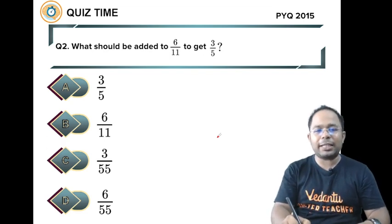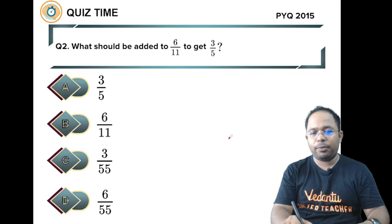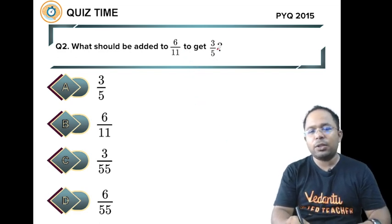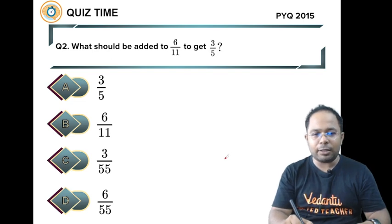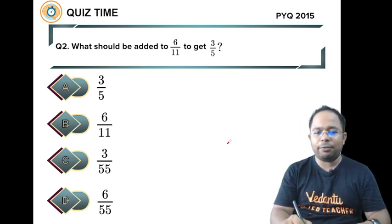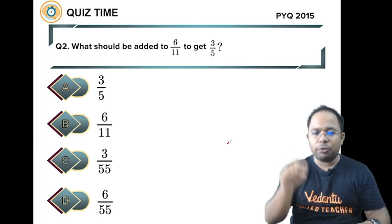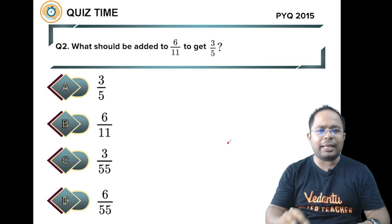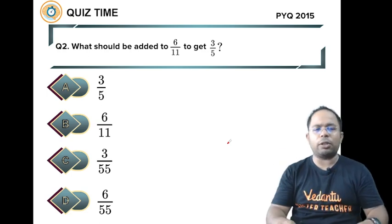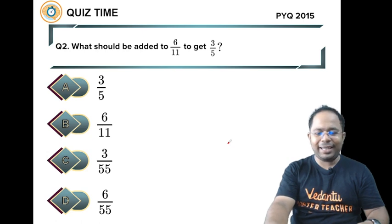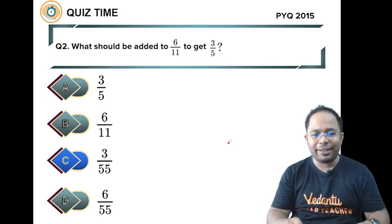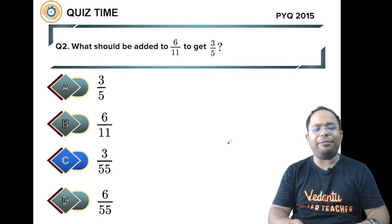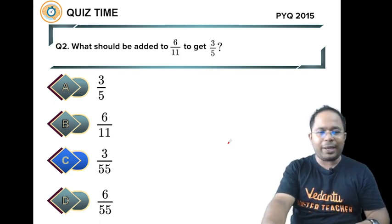Let's move on to the next question. What should be added to 6 by 11 to get 3 by 5? Is your answer 3 by 5, 6 by 11, 3 by 55, or 6 by 55? Pause the button and get the answer and write that on the comment box also.